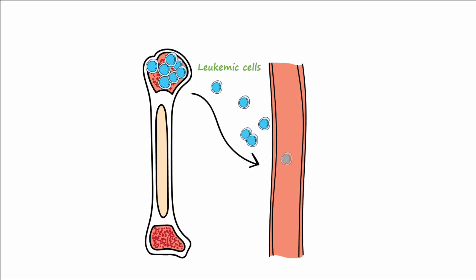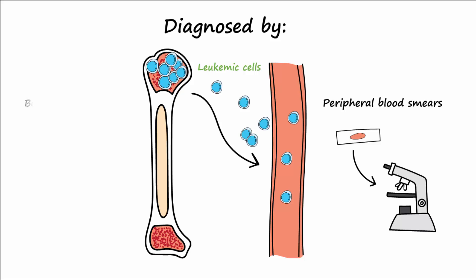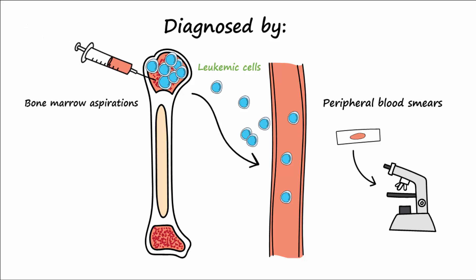Since these cells can be found in both the blood and bone marrow, leukemia is diagnosed through analyses of peripheral blood smears and bone marrow aspirations. The prognosis for leukemia depends on the type and characteristics of the cells present in smears and aspirates.